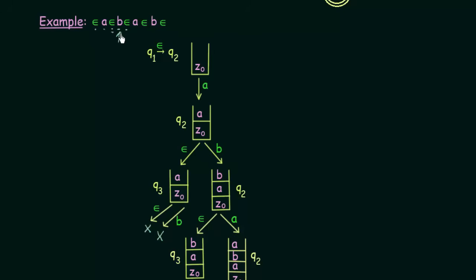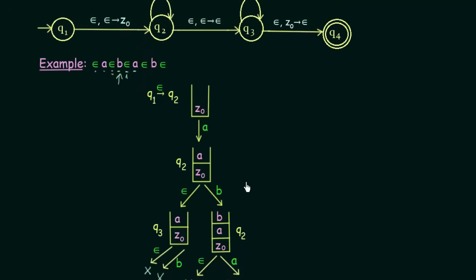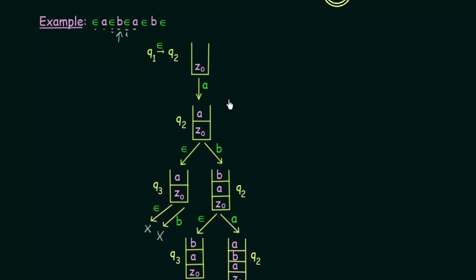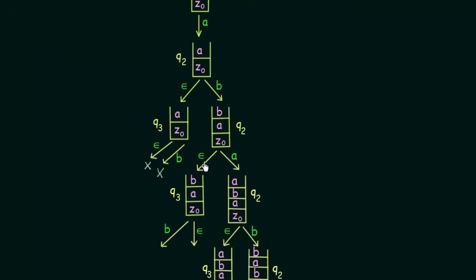At this point we again have two options for the next input: either epsilon or 'a'. Let us first read epsilon. In state q2, if you read epsilon, you go to state q3 without pushing or popping anything. So reading epsilon takes us from state q2 to state q3, and the stack remains exactly the same.